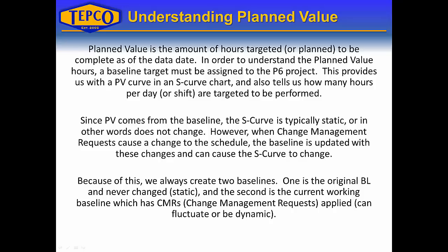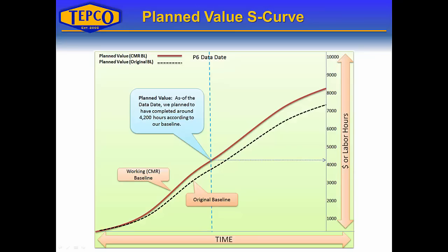Since the planned value comes from the baseline, the S-curve is typically static — it does not change. But when change management requests cause a change to the schedule, the baseline should be updated, and it can cause the S-curve to change for the planned value. Because of this, we always create two baselines: one is the original baseline, which is never changed, and the second is a working baseline — sometimes called a change management request baseline — which gets updated with added or removed work.